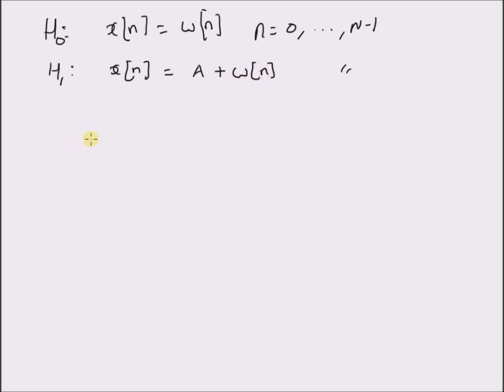Here the main problem is that both the DC level A and the variance of the noise, sigma squared, simply written as sigma square, are also unknown.